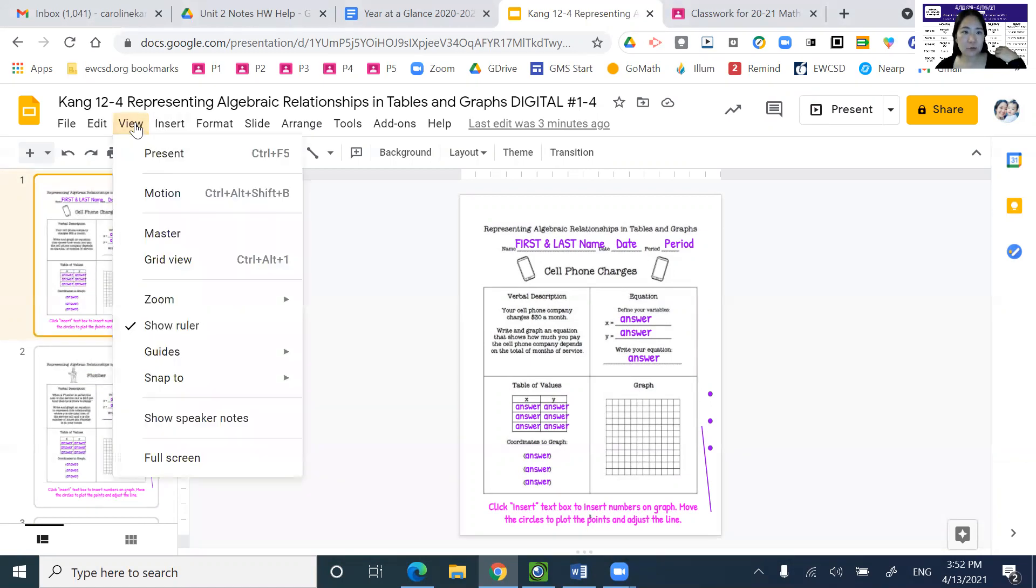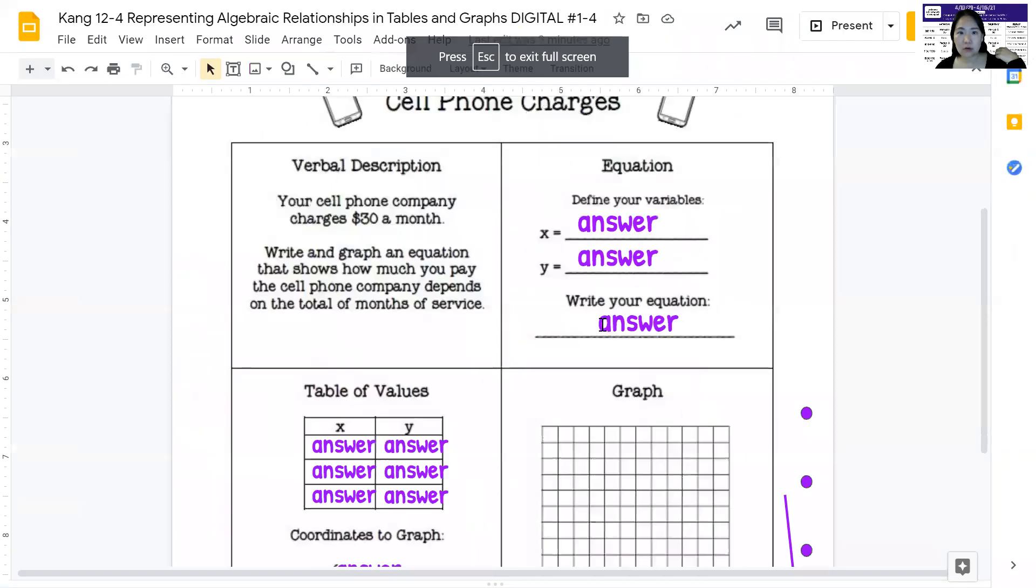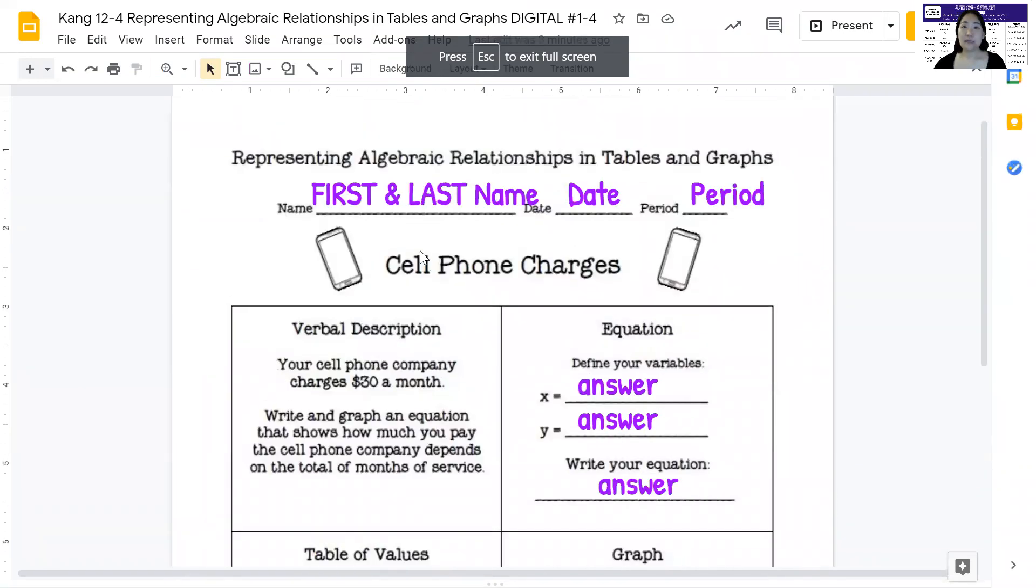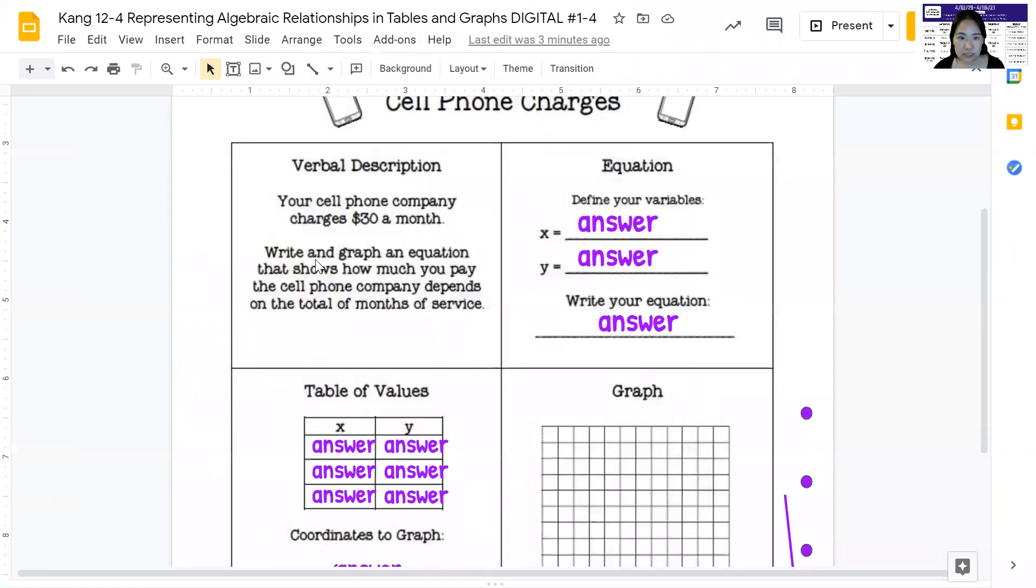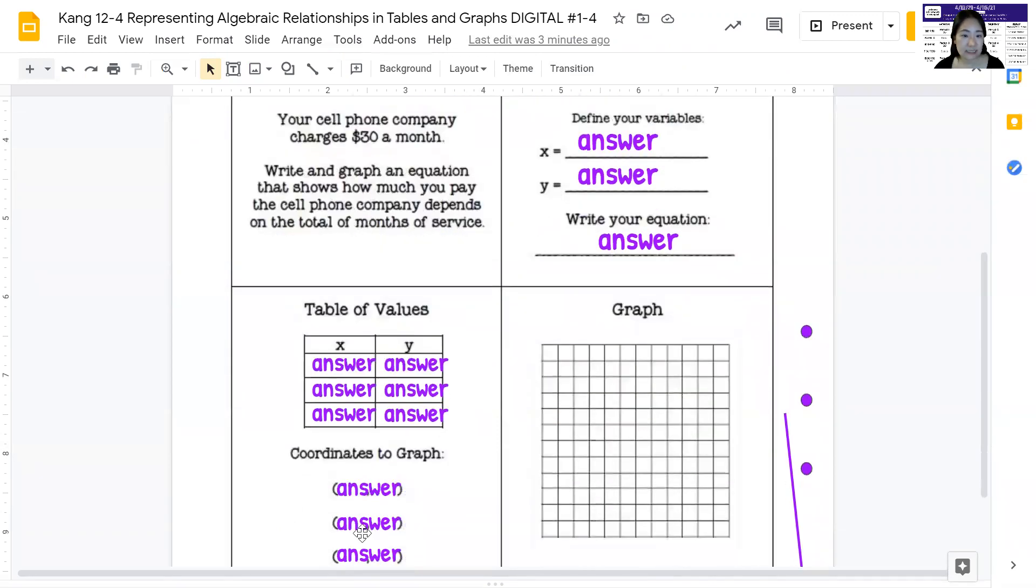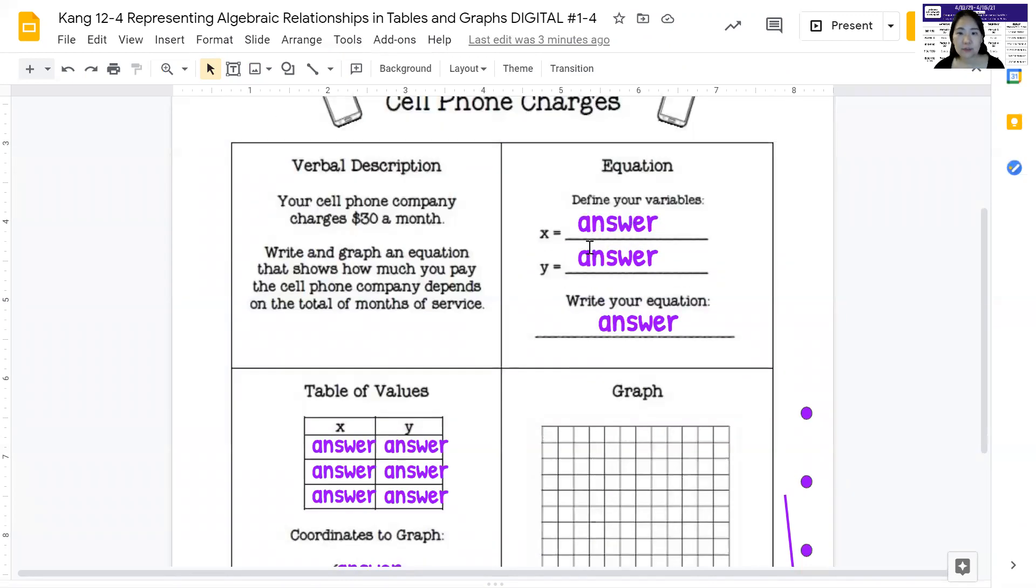First, what I'm going to do is I am going to increase the size so I can see better. So here we go. Every problem, it's the same pattern. So they give you a verbal description. Using that, first you're going to write the table of values here. Give the coordinates, the x and y coordinates.